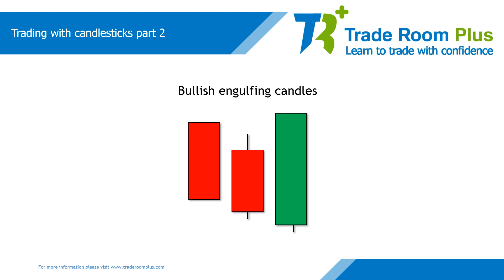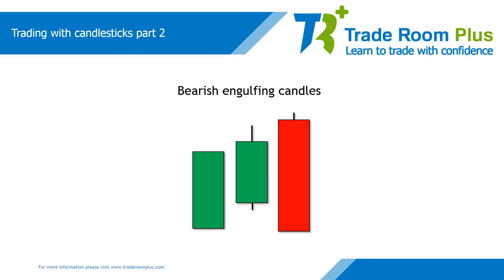You may see several candles trending down when a bullish engulfing candle appears. As we can see here, the entire open, high, low and close — the OHLC — of the previous candle has been engulfed by the current candle. Not only that, but the close of the engulfing candle is above the previous candle's high. Here we can see a bearish engulfing candle where the entire OHLC of the previous candle has been engulfed, and the close of the engulfing candle is below the previous candle's low.